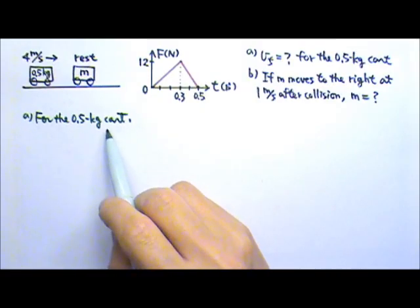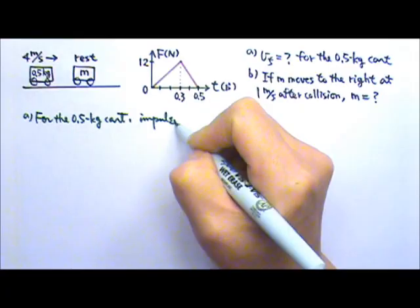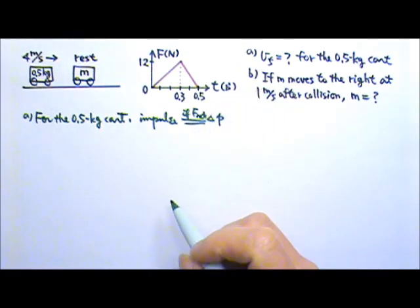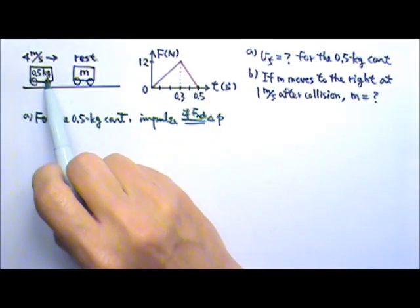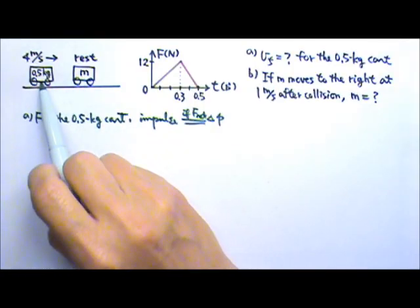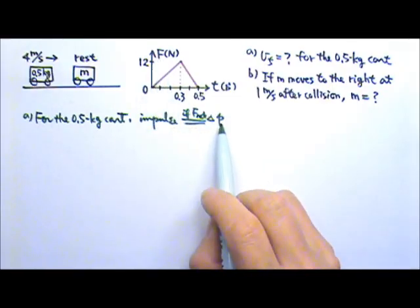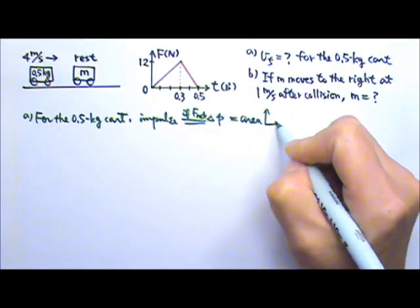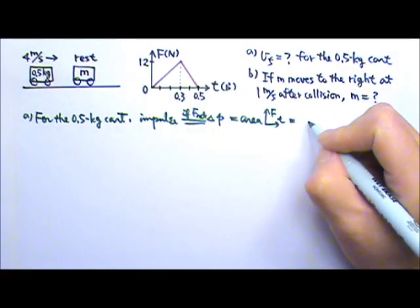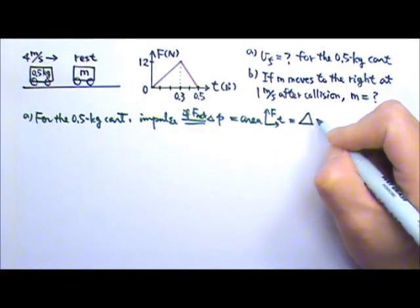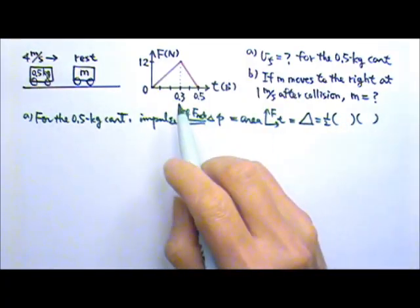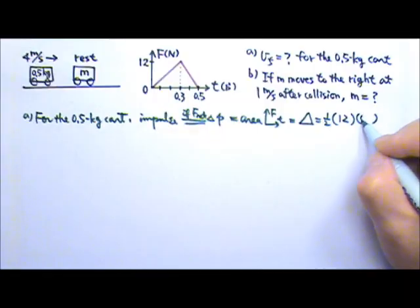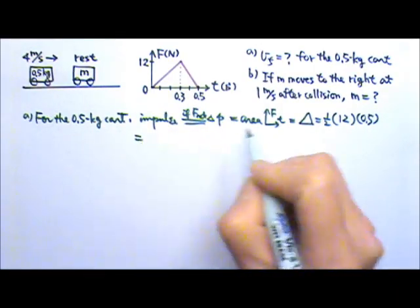For Part A, for the 0.5 kg cart, the impulse on that cart equals the change in momentum if we are talking about the net force on the cart. During the collision, the force on the 0.5 kg cart from the other cart is the net force, so the impulse from this force equals the change in momentum. The impulse is the area of the force versus time graph — the area of this triangle — which is one-half times height times base. The height of the triangle is 12 and the base is 0.5, giving us 3.